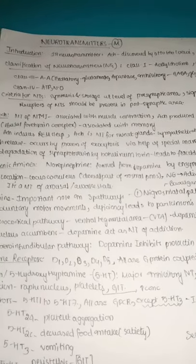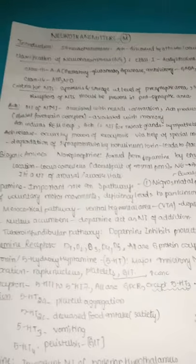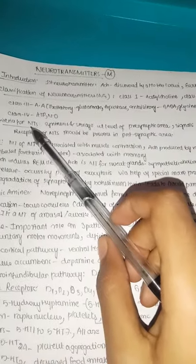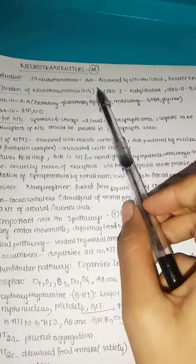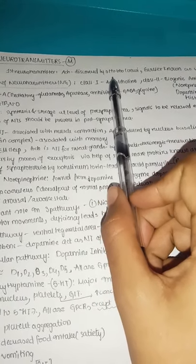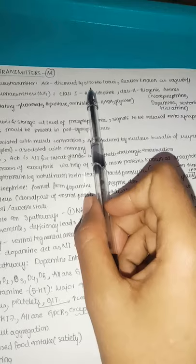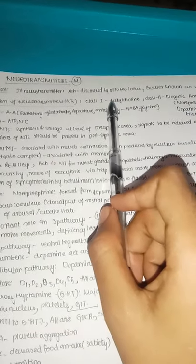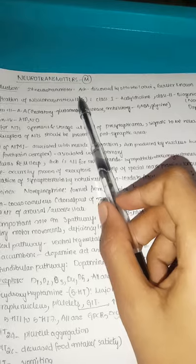Today we are going to start the CNS physiology revision series. First we are going to start with neurotransmitters. The first neurotransmitter discovered is acetylcholine, mainly discovered by a scientist called Otto Loewi. It was earlier also known as Vagusstoff. Now it is known as acetylcholine, the first neurotransmitter found by Otto Loewi.